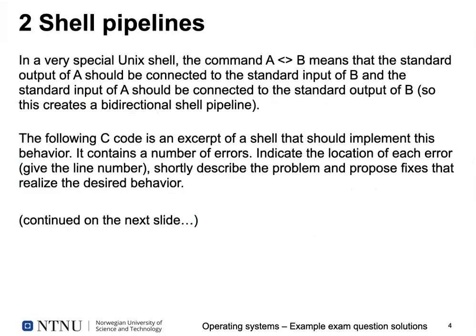The next question was about shell pipelines. We invented an artificial setting: a special Unix shell that implements bidirectional pipes using an 'a < > b' syntax instead of a pipe symbol. This means not only is the standard output of 'a' connected to the standard input of 'b' as a usual pipe would do, but there's also a link back so that everything 'b' outputs appears on the standard input of 'a'. We gave you a C code excerpt from a shell implementation with a number of errors, and your task was to find them, describe the problem, and propose a fix.